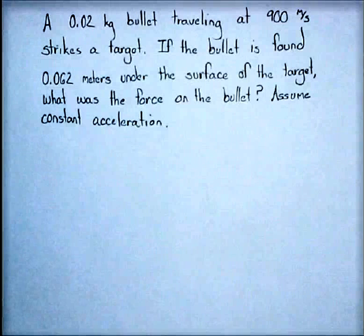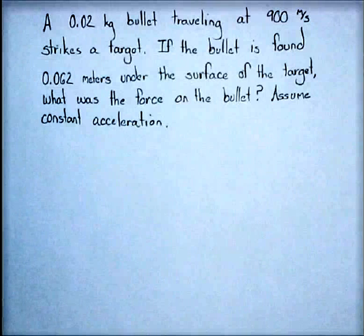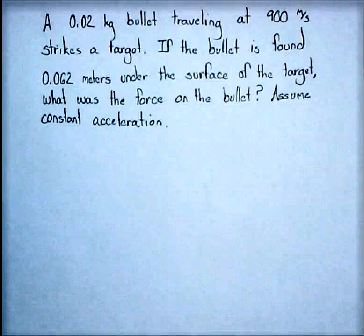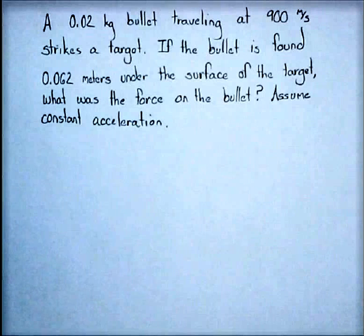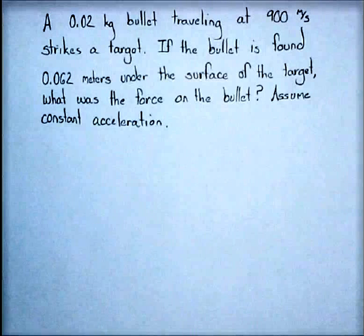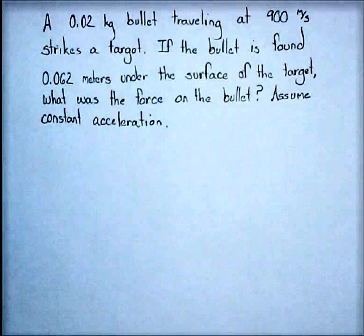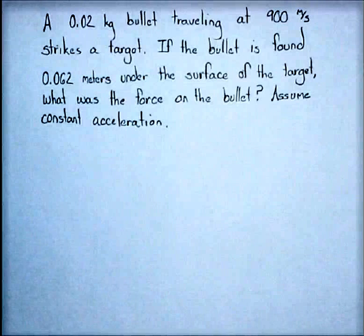So the problem: a 0.02 kilogram bullet traveling at 900 meters per second strikes a target. If the bullet is found 0.062 meters under the surface of the target, what was the force on the bullet? Assume constant acceleration.